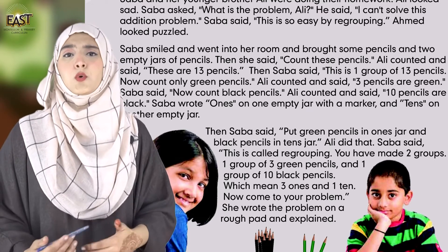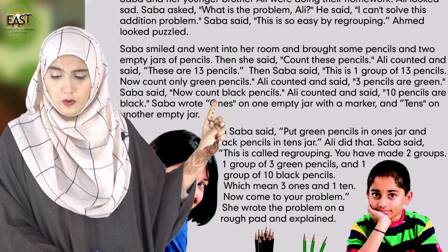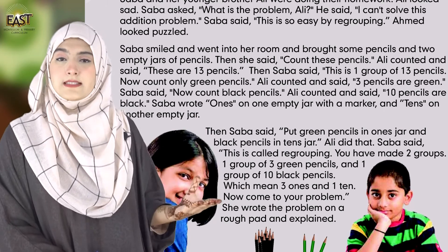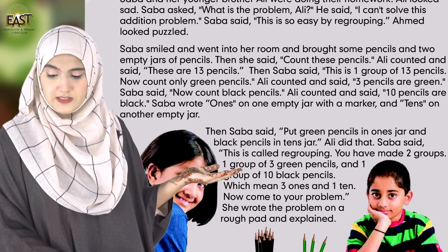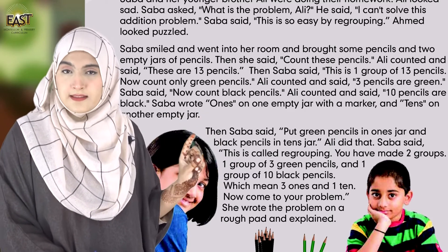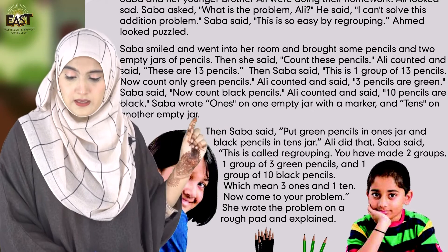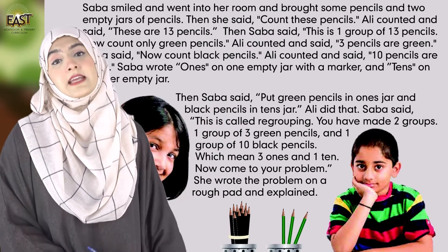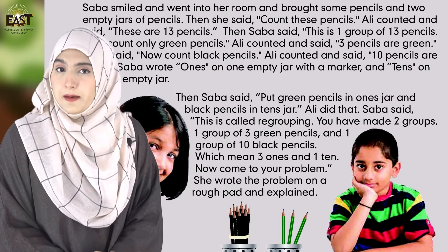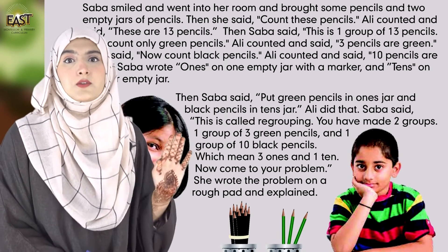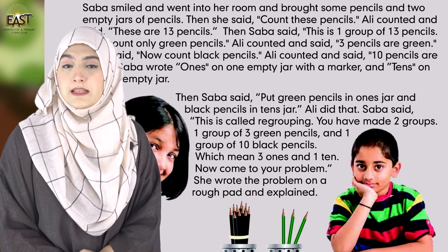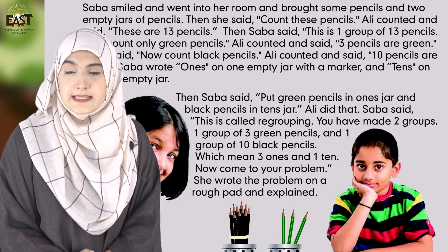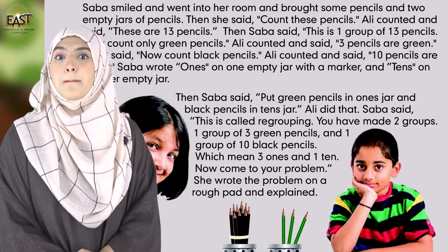Sabha wrote '1's' on one empty jar and '10's' on another empty jar — ایک jar پہ 1's لکھا اور دوسرے empty jar پہ 10's لکھا۔ Then Sabha said, 'Put green pencils in the 1's jar and black pencils in the 10's jar' — یعنی single unit values green pencils کو 1's والے jar میں اور black pencils کو 10's والے jar میں ڈال دیجے۔